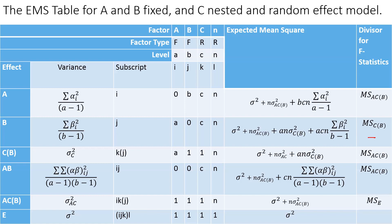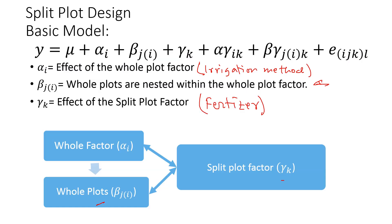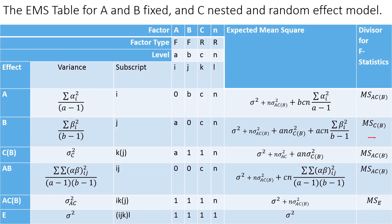However, the repeated measure design comes primarily from medical, psychology, and human factors fields and gets a different name. The split plot comes from the agricultural field and gets a different name, but their models, F statistics, and analysis are very similar.